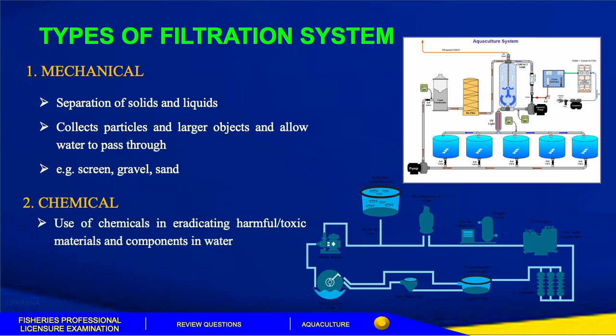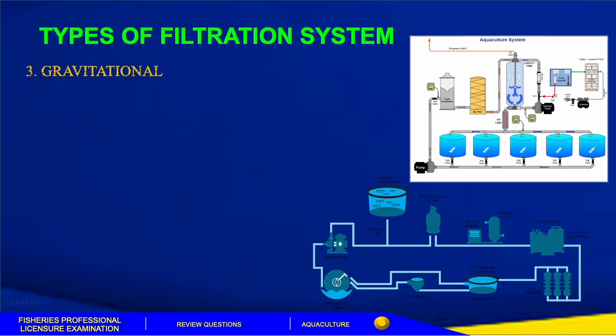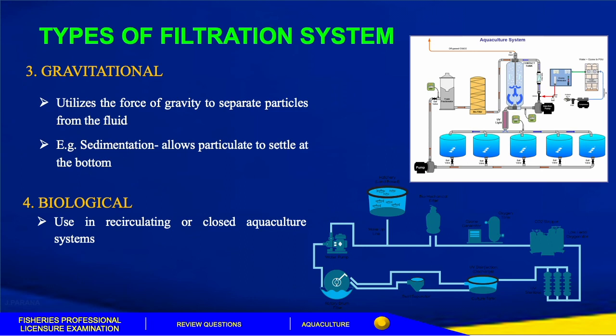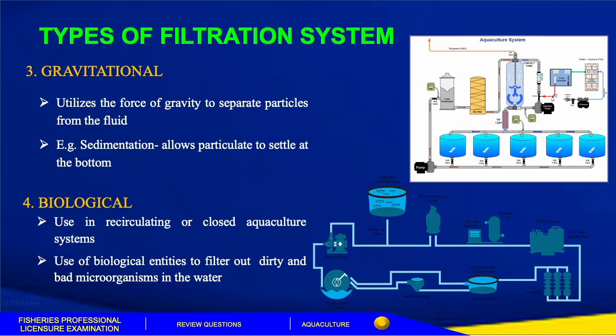Chemical filtration uses chemicals to eradicate harmful toxic materials and components in water — examples are UV treatment and chlorine. Gravitational filtration utilizes the force of gravity to separate particles from fluid — an example is sedimentation, which allows particulates to settle at the bottom. Biological filtration is used in recirculating or closed aquaculture systems; it uses biological entities to filter out dirty and bad microorganisms in the water — examples are seaweeds, bivalves, and probiotics.